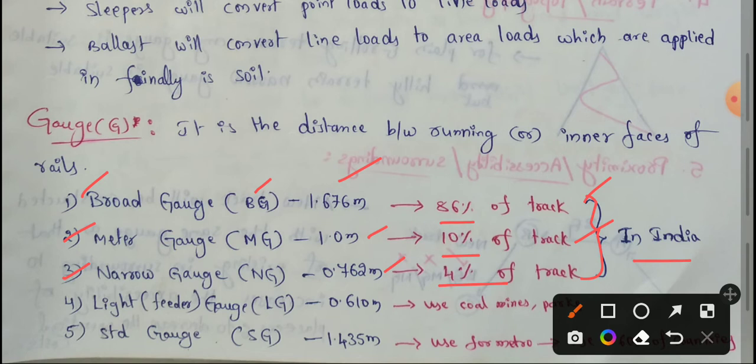Next, we have two more types of gauges. First is light gauge, also called the feeder gauge. This light gauge is 0.610 meters.